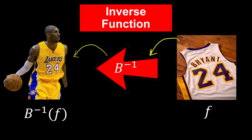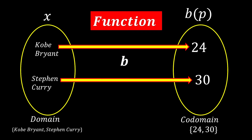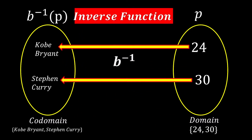Let's look at the arrow diagram. We have the function b, and in the domain we have choices: Kobe Bryant or Stephen Curry. This function tells us their jersey numbers. In the co-domain we have 24 and 30. If we inverse it, the arrows go in the opposite direction.